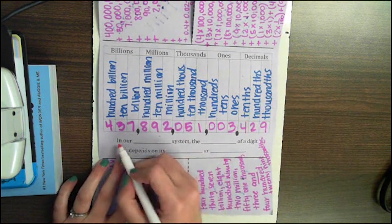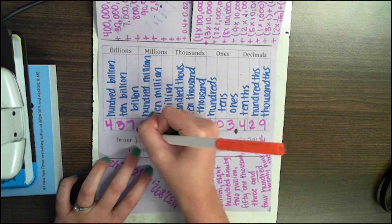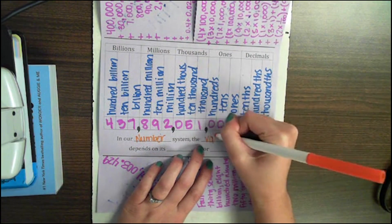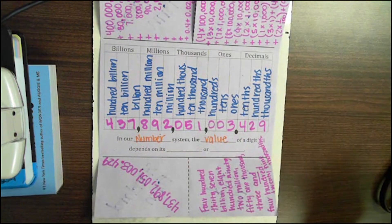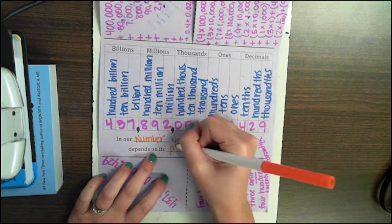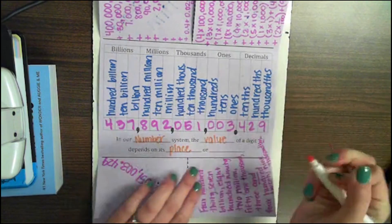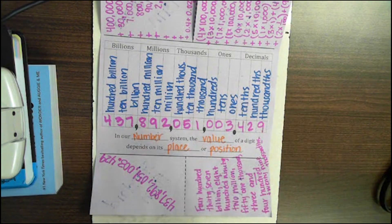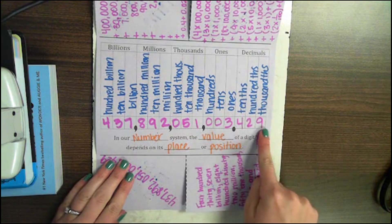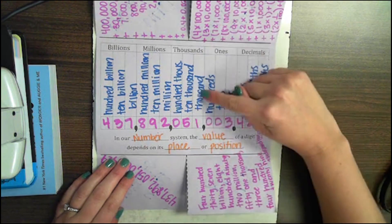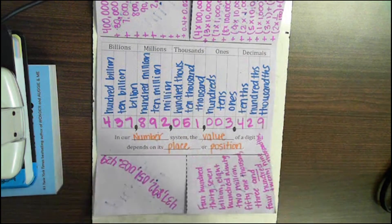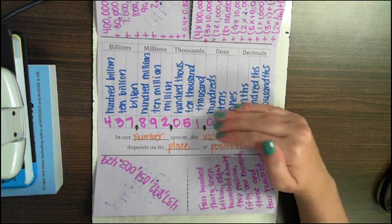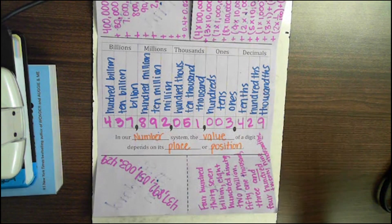What we're going to have is, in our number system, the value of a digit depends on its place or position, which basically means wherever the number is located in the place value chart, the value depends on where it is located. So that's why we need to be sure we know each of these labels and where they're located so that we know the value of each of our digits. That's it!